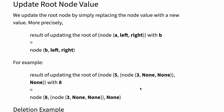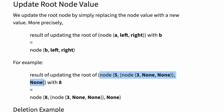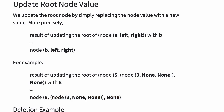Next, let's look at updating the root node value. We update the root node by simply replacing the node value with the new value. More precisely, the result of updating the root of node A left right with B is equal to node B left right. For example, the result of updating the root of the tree with node 5 and node 3 with 8 is equal to the same tree with the root value of 8.